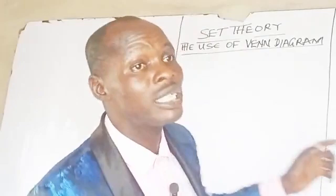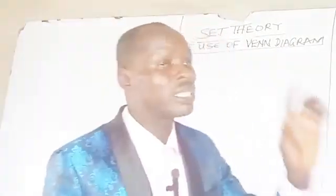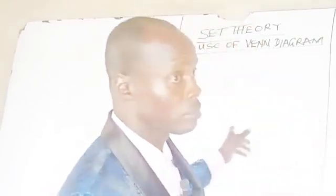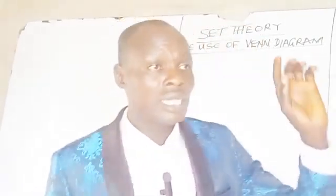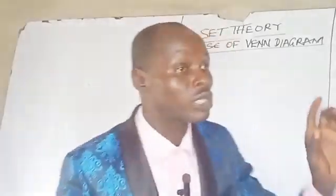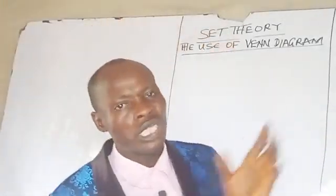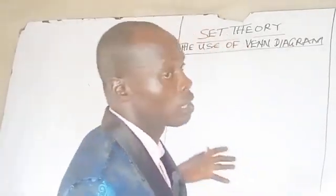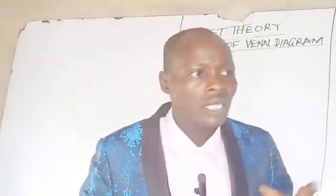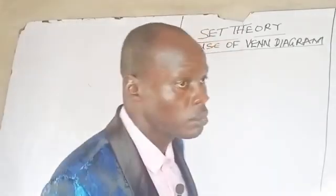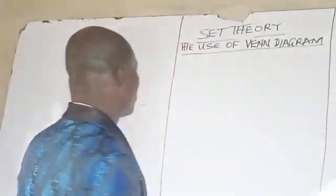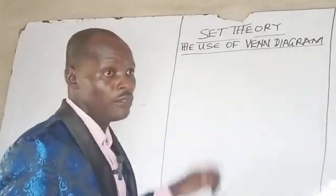A Venn diagram is a geometrical representation of sets — a diagrammatical representation of sets by closed figures. It was developed by John Venn.